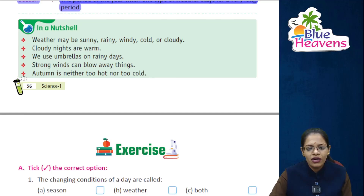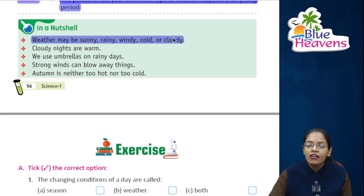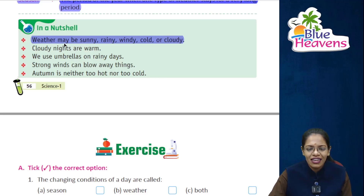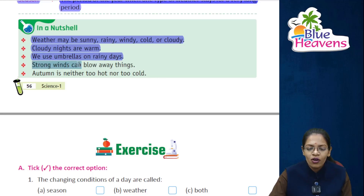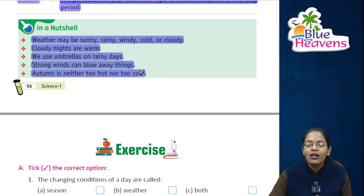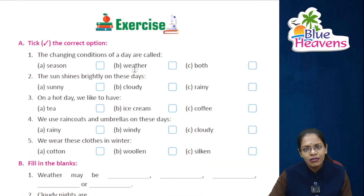Now students, let's look in a nutshell. First point: weather may be sunny, rainy, windy, cold, or cloudy. Baccho, weather garam bhi ho sakta hai, thanda bhi ho sakta hai, barish wala bhi ho sakta hai, ya aasman mein sirf baadal bhi ho sakte hain. Now students, it's exercise time — let's do Exercise A.